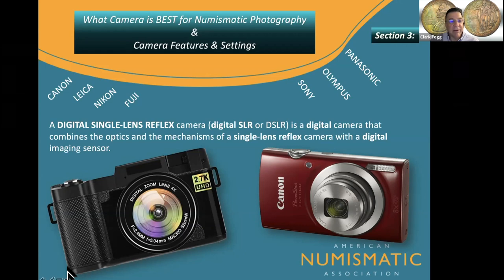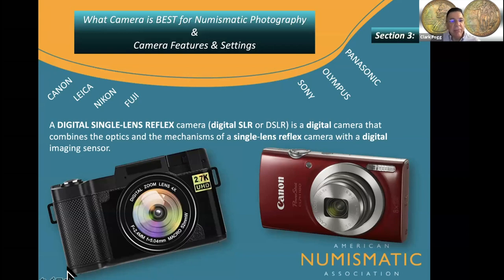A lot of it has to do with pocketbook — cameras can get very expensive. You may already have a camera, but a lot of these cameras are not capable of doing proper close-up photography. They're great for taking family vacation photos and general photography, but when it comes to close-up photography, it requires a particular type of camera.